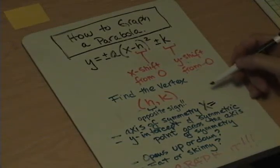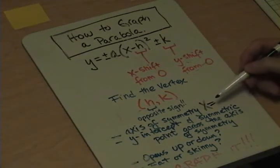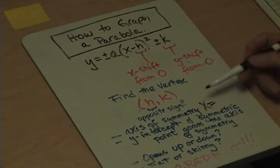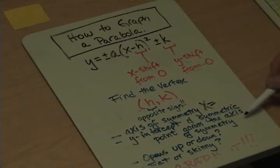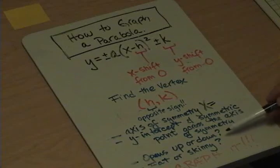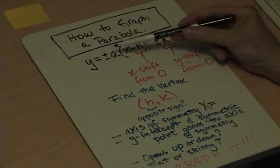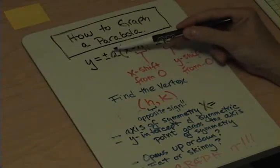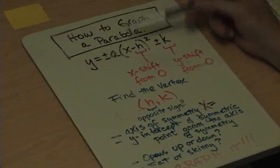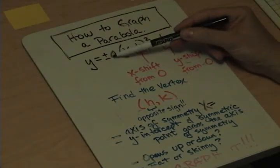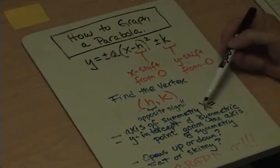The x value is the axis of symmetry. Then you want to find the y-intercept and a symmetric point across the axis of symmetry. Then you want to ask yourself: does the parabola open up or down? If the value a is a positive number, then the parabola opens up. If it's a negative number, it opens down.